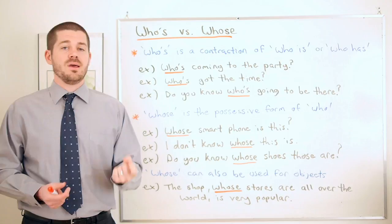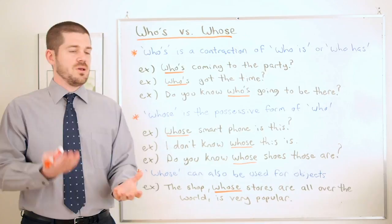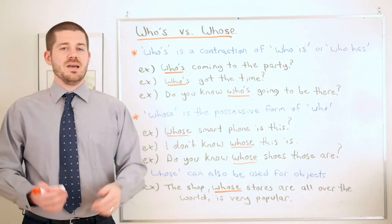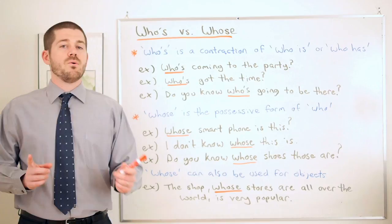So whose will always be followed by a noun, because again if we're thinking about a possessive we must have a noun because we're saying who does this object belong to. So the object is going to be a noun: shoes, smartphone, or in this case this.